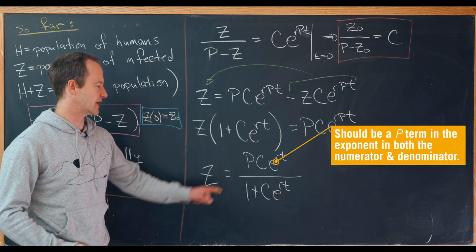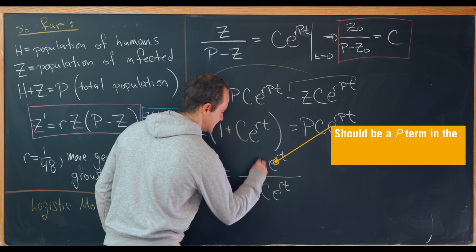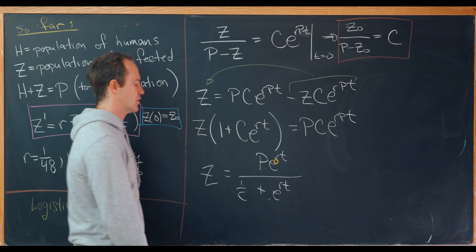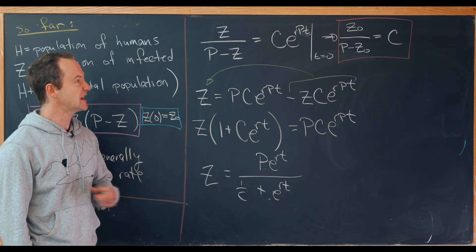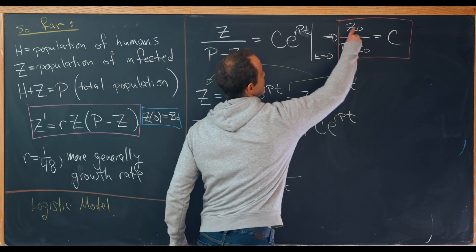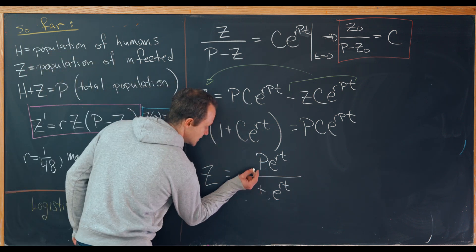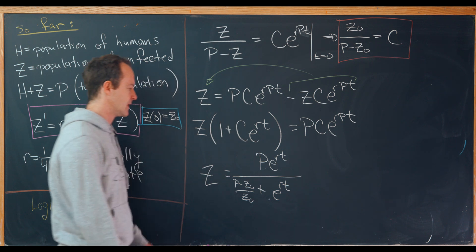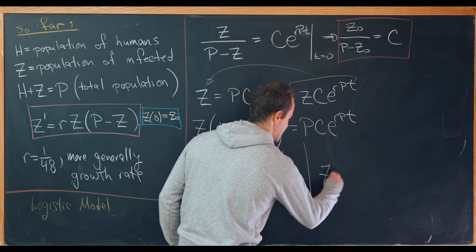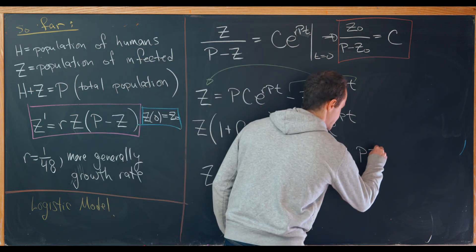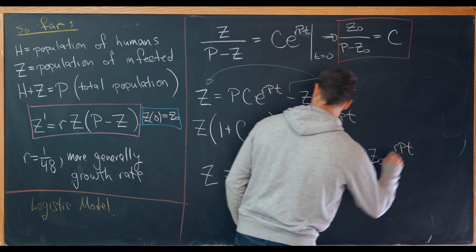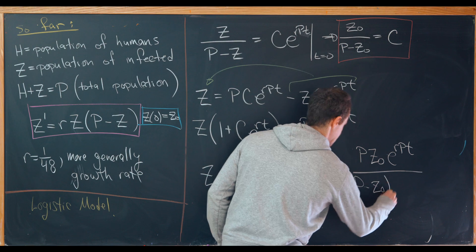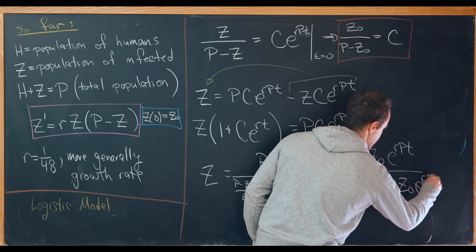But now let's simplify this a little bit. I'm going to multiply the numerator and the denominator by one over C. So that'll give me a P here and that'll give me a one over C plus just that term over there. Okay, so that's looking a little bit nicer. Now I'm going to finish this off by noting that C is equal to Z naught over P minus Z naught. So I'm going to write this one over C as P minus Z naught over Z naught. But then I'll multiply the numerator and the denominator by Z naught and that'll give me a nice final form. So we have Z is equal to P times Z naught E to the RPT over P minus Z naught plus Z naught E to the RPT.